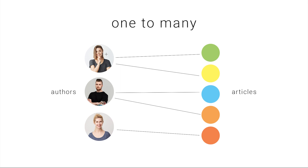As you see here, this author is linked to two posts, and this one is linked to two as well, but articles are only linked to one author. Each article can only be linked to one author.